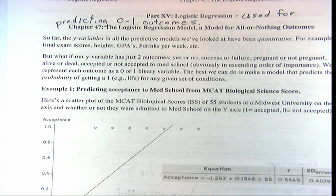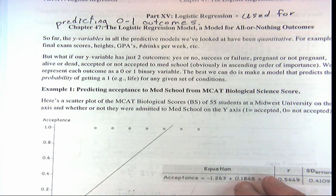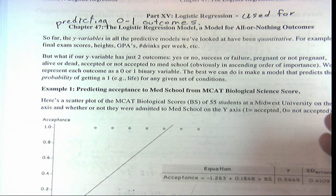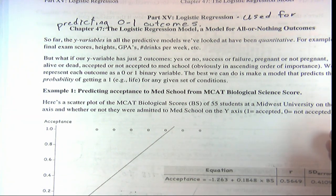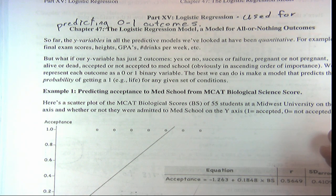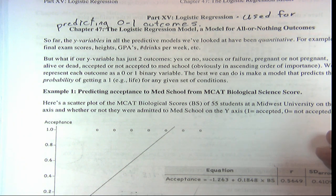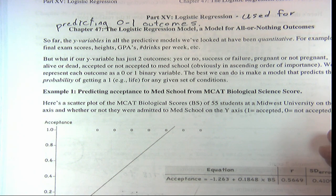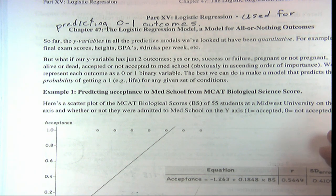We've been doing log transforms, transforming variables that aren't linear into more linear ones by doing log and square root transforms, but this is different. All of our y variables when we've done regression have been quantitative variables. Even when we were doing ANOVA, the x's were categorical — categories or groups — but the y was quantitative. So all our regression has been with y being a quantitative variable.